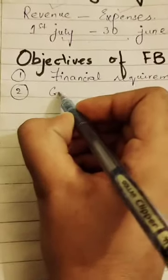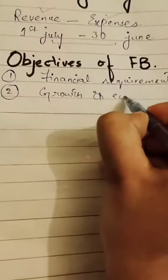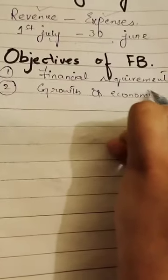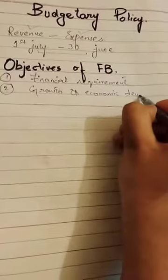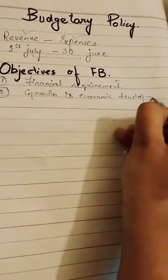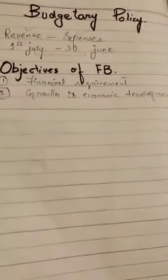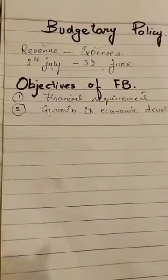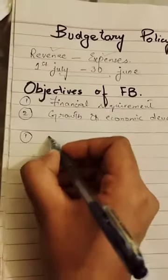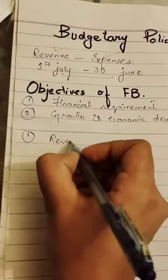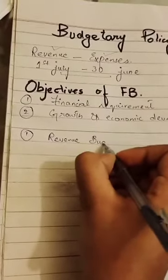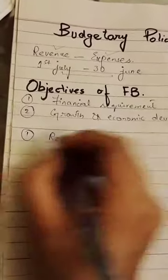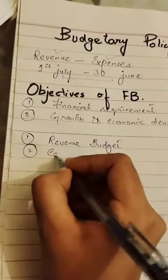Secondly, we need our growth and economic development to be smooth through the budget. In the budget, we have two heads — two sections. The first section is the revenue budget, and the second one is the capital budget.